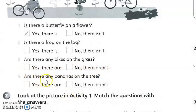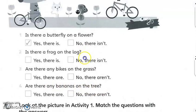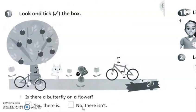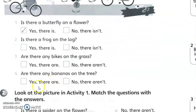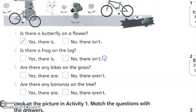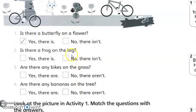Are there any bananas on the tree? Ada tak pisang di atas pokok? Tengok, pokok ada pisang ke? Hmm, okay, what is the answer? Yes they are, ataupun no they aren't. Okay, tandakan. Selepas kamu tanda dan dah siap ni, okay, mana mana jawapan ni.